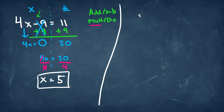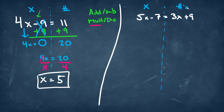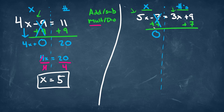Moving on to the next problem. For this one, we're going to have 5x minus 7 is equal to 3x plus 9. We want to follow the same steps — get all of our variables on one side and all of our numbers on the other side. Because we have 5x on the left side, and that's bigger than the 3x, we're going to move all of our x variables to the left side, which means we'll move all of our numbers to the other side. We'll start by adding 7, because we're going to do the opposite of the minus 7. Negative 7 plus 7 will be 0, effectively cancelling this out, and on the other side we're going to be left with 16.